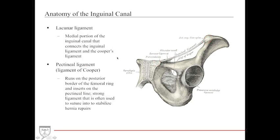The next structure is the lacunar ligament, which is shaped like a crescent moon. It is located in the medial portion of the inguinal canal and connects the inguinal ligament and Cooper's ligament.